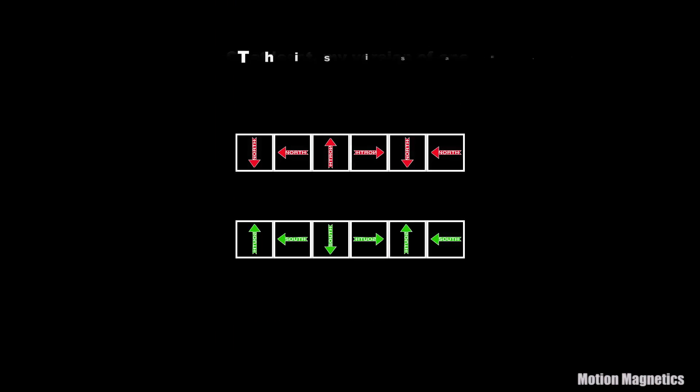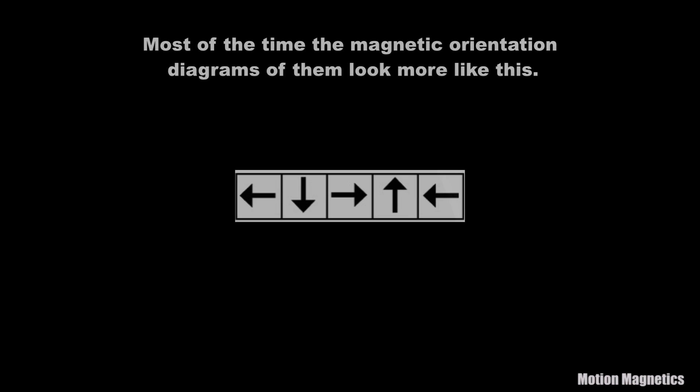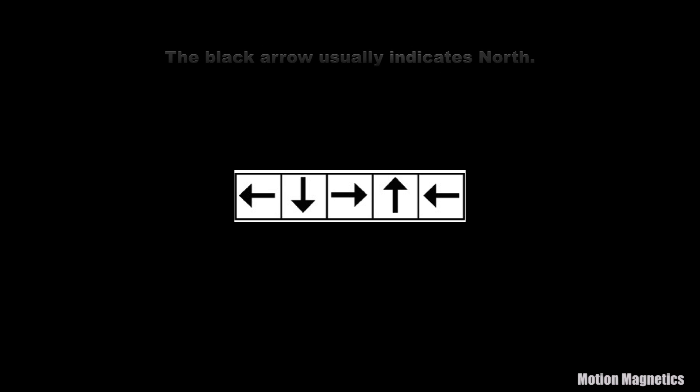This is a Halbach Array, at least my version of one. Most of the time the magnetic orientation diagrams of them look more like this. Black arrow usually indicates the north.